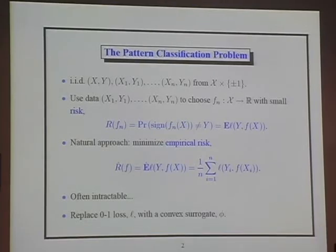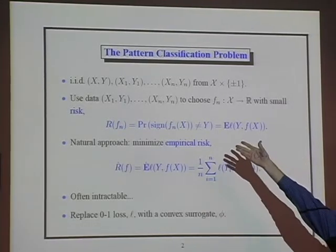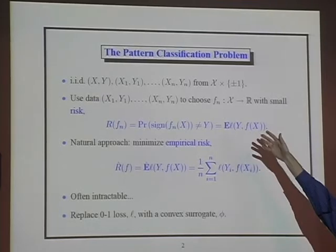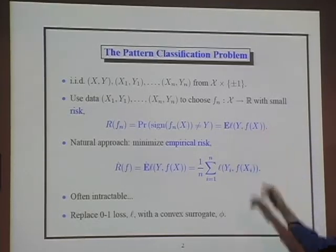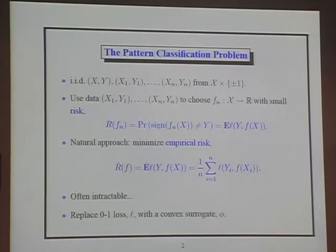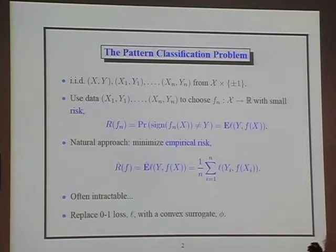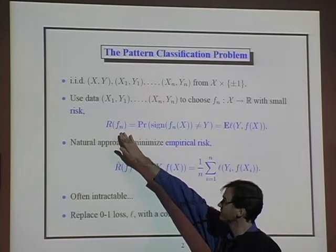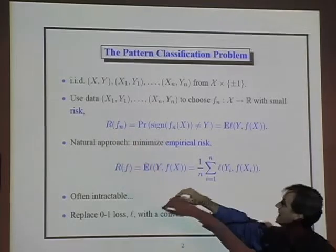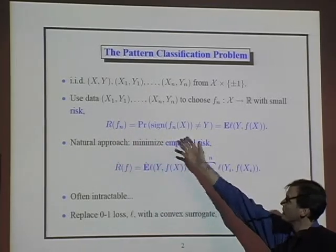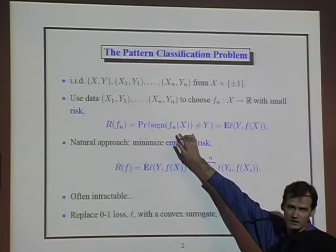The assumption that the data are IID is crucial in what we do. The aim is to use N (X, Y) pairs to choose some mapping from the space X to the reals that we're going to use as a classifier. We'll use the sign of that real-valued mapping to predict the labels for a particular X, and the aim is to come up with small risk. The risk for a classifier is the probability of misclassification when we threshold at zero.